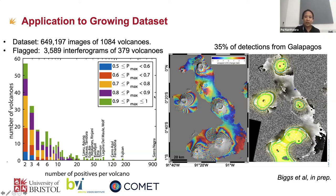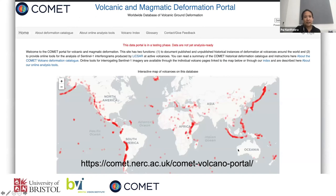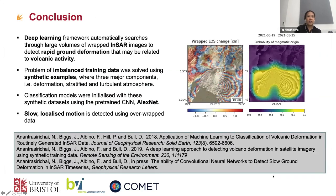This method has already been implemented on the COMET portal, which you can check on the website shown here. For the conclusion of this talk: we use a deep learning framework, CNN, to process all the large volume of InSAR interferograms. The original goal was to detect rapid ground deformation — for example, you can see the most recent eruption near Agung volcano last month.